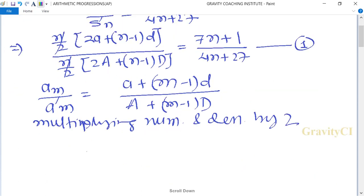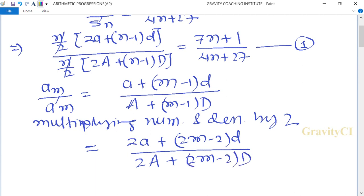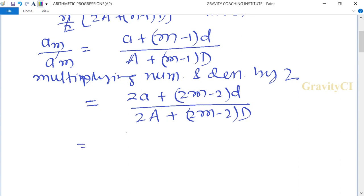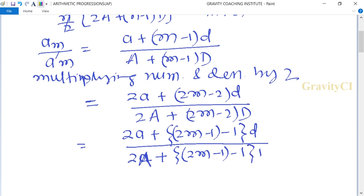Equals [2a+2(m-1)d] upon [2A+2(m-1)D]. Now writing as [2a+(2m-1-1)d] upon [2A+(2m-1-1)D].